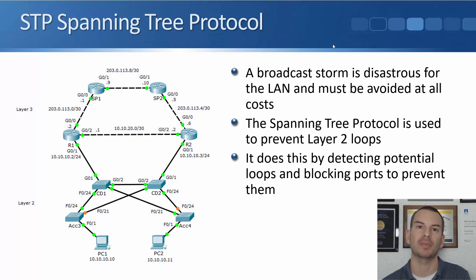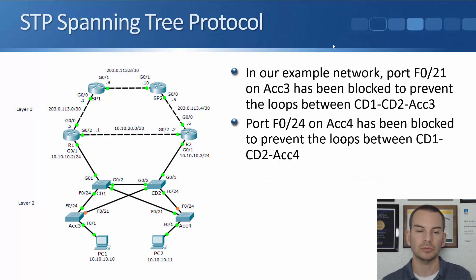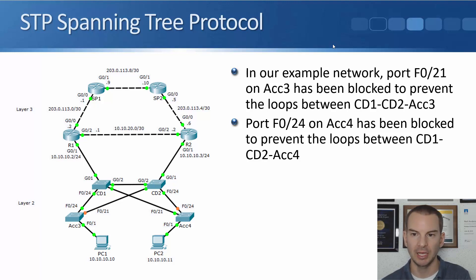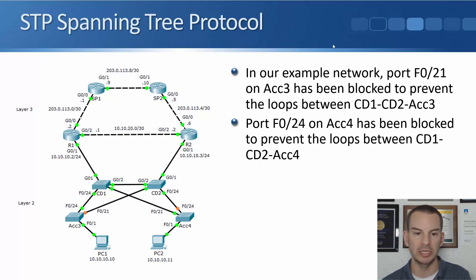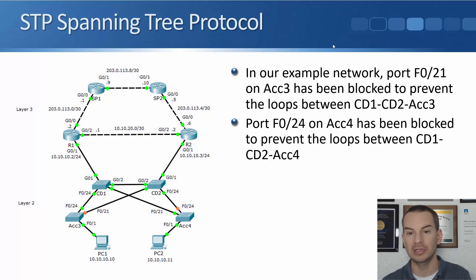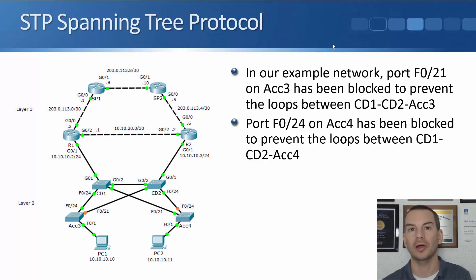A broadcast storm must be avoided at all costs, and the way we do that is by using the Spanning Tree protocol. It's used to prevent any Layer 2 loops by detecting potential loops and blocking ports to prevent them. In our example network, you can see on the diagram that a couple of links are highlighted in red. Port Fast0/21 on Switch Access 3 has been blocked to prevent the loops between CD1, CD2, and Access 3. Port Fast0/24 on Switch Access 4 has also been blocked to prevent the loop between Access 4, CD1, and CD2.